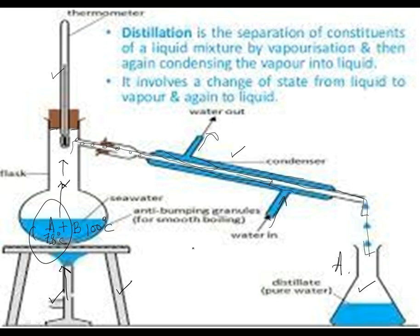When 78 degrees Celsius temperature is achieved, liquid A is separated. When all of liquid A is separated and on further heating the temperature reaches 100 degrees Celsius, liquid B will rise up and boil, and the vapors will again pass through the condenser. This is how by using distillation, we can separate a mixture of liquids on the basis of their boiling points.